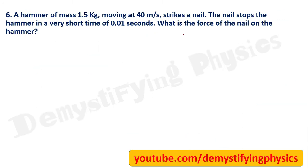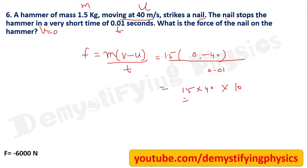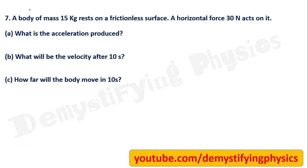A hammer with given mass moves with initial velocity u = 40 m/s and strikes a nail, coming to rest in 0.01 seconds. So v = 0 and time is given. Use F = m(v - u)/t. Putting all values: 1.5 × (0 - 40) / 0.01 gives -6000 Newton. The negative sign means the force is retarding in nature.